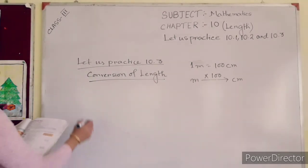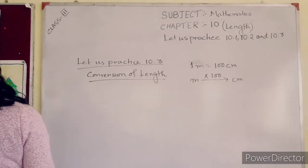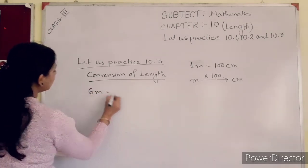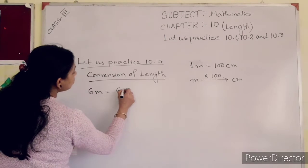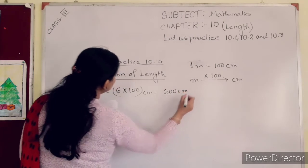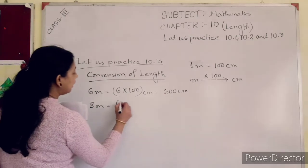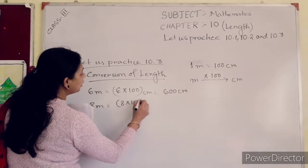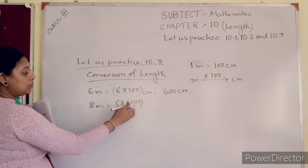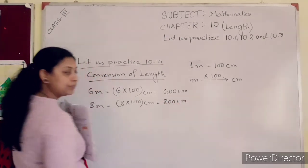When you convert meter to centimeter you have to multiply by 100, because 1 meter equals 100 centimeter. I am giving you an example: the first rule is to multiply the number of meters by 100 and write centimeter on the right side. 6 meter = 6 × 100 = 600 centimeter. 8 meter = 8 × 100 = 800 centimeter.